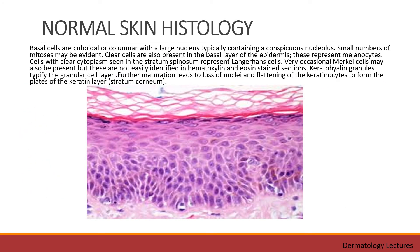Now we will discuss the normal histology of epidermis. Starting from the bottom, basal cells are cuboidal or columnar with a large nucleus typically containing a conspicuous nucleolus. Small numbers of mitoses may be evident. Clear cells are also present in the basal layer representing melanocytes. Cells with clear cytoplasm seen in the stratum spinosum represent Langerhans cells. Very occasional Merkel cells may also be present, but these are not easily identified in hematoxylin and eosin stained sections. Keratohyaline granules typify the granular cell layer. Further maturation leads to loss of nuclei and flattening of the keratinocytes to form the plates of the keratin layer, that is stratum corneum.